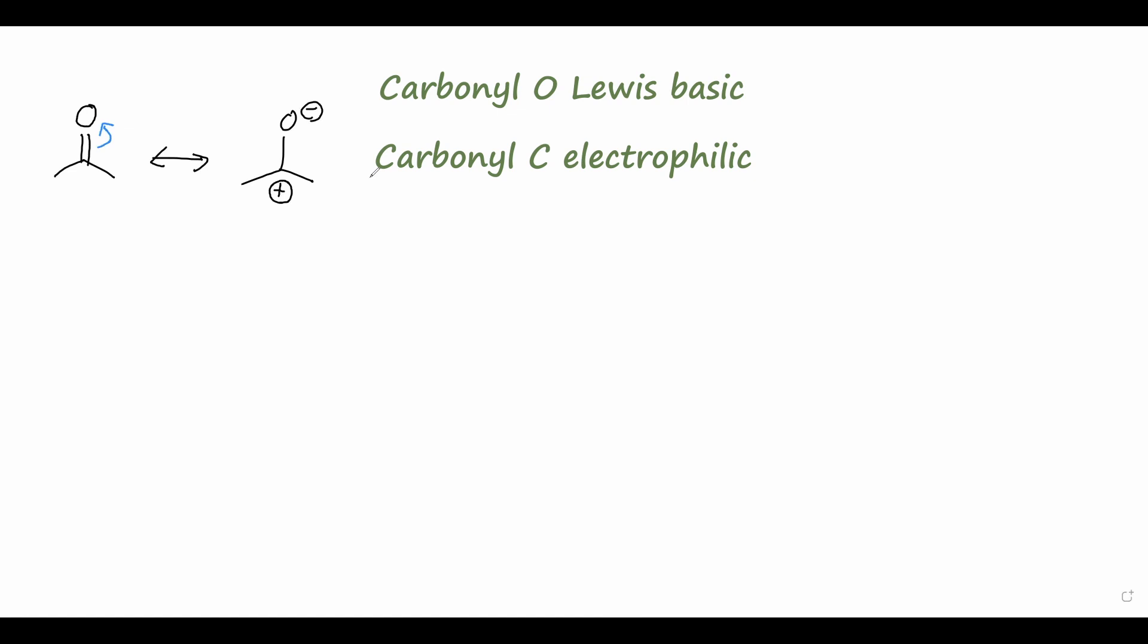One example of this that we've already discussed is the Grignard reaction. If we take acetone as our carbonyl starting material and treat it with a Grignard reagent such as methyl magnesium bromide, we often do this in diethyl ether as a solvent. We know that the carbon atom in the Grignard reagent acts as a strong nucleophile, so this bond between carbon and magnesium can swing up to attack the electrophilic carbon atom of the carbonyl, and the pair of electrons in the carbon-oxygen double bond come up to the oxygen.